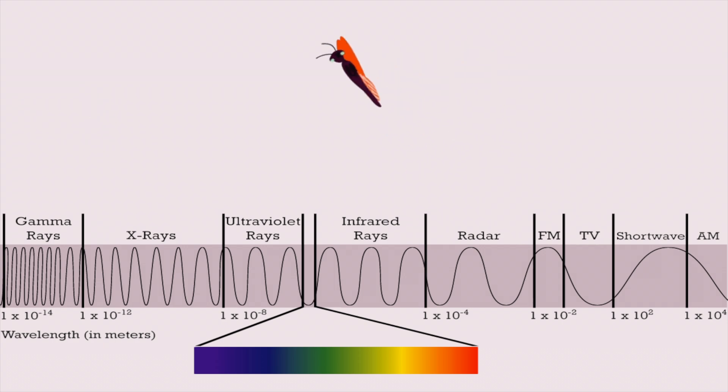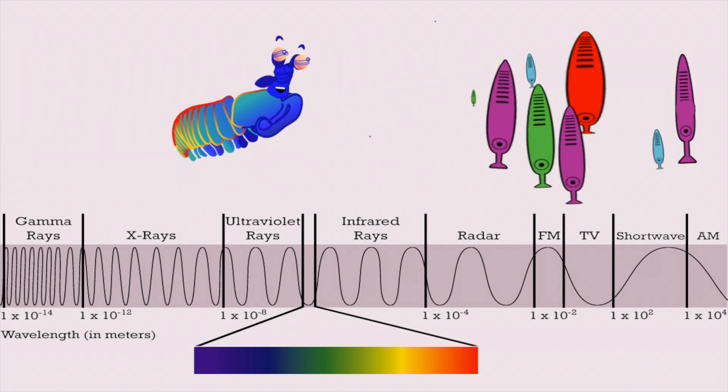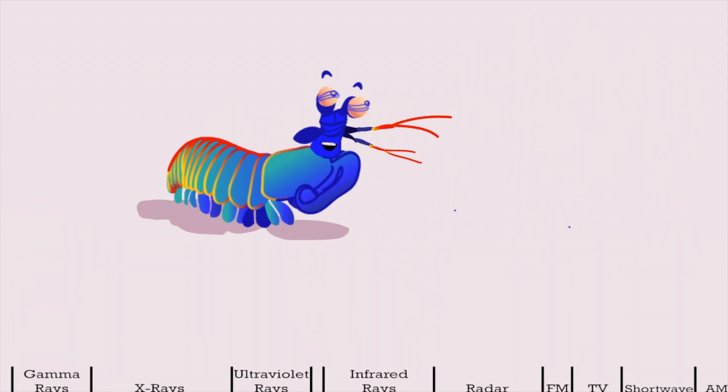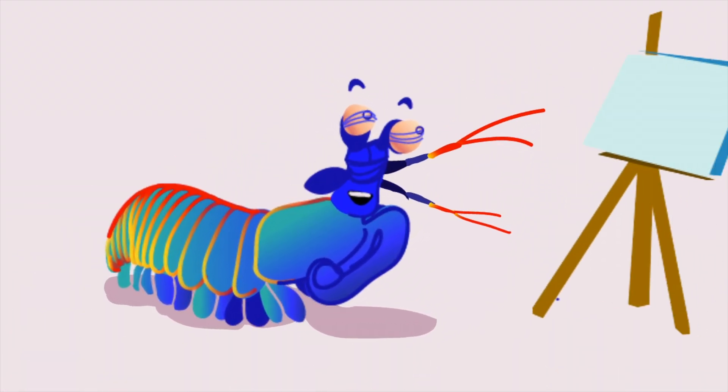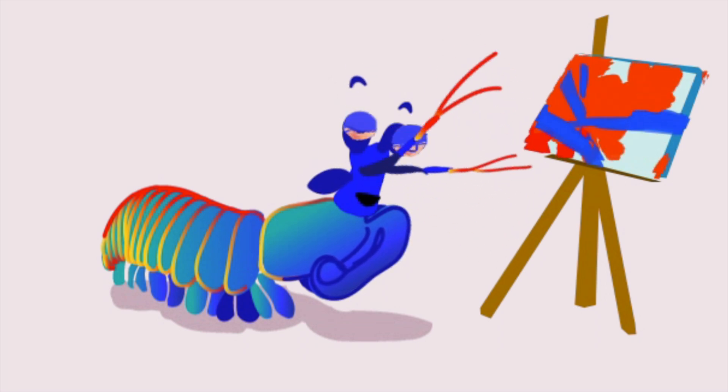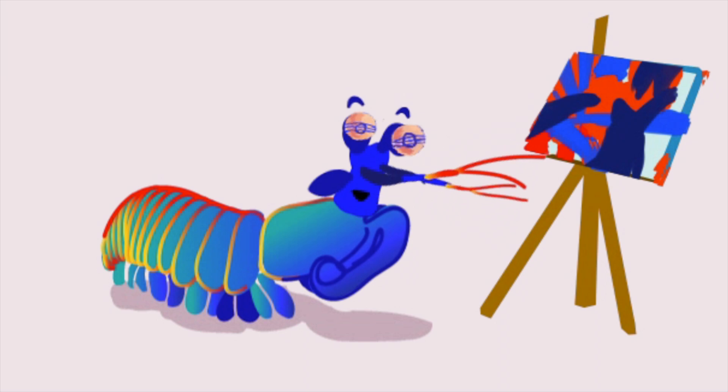The animal with the best color vision might be the mantis shrimp, which has 12 different kinds of cones. If Pablo Picasso and Paul Klee created amazing works of art with just three types of cones, imagine the masterpieces the mantis shrimp would create with 12.